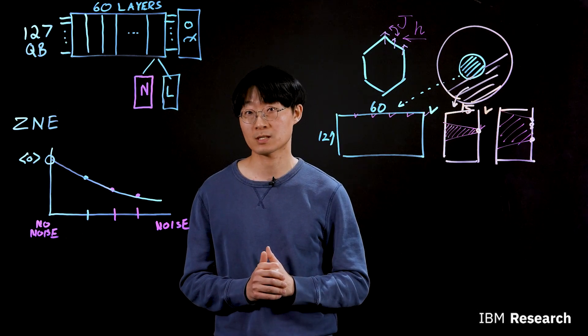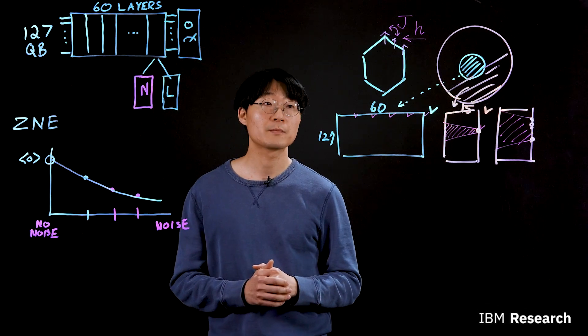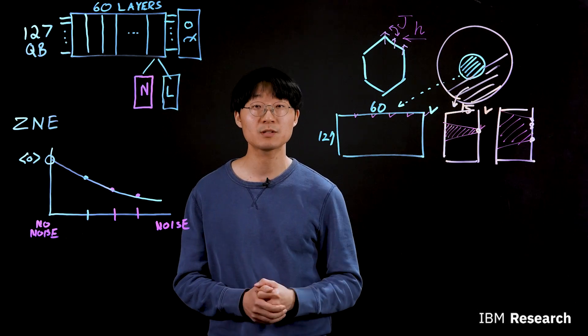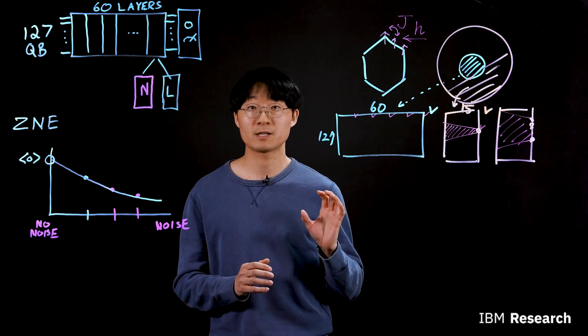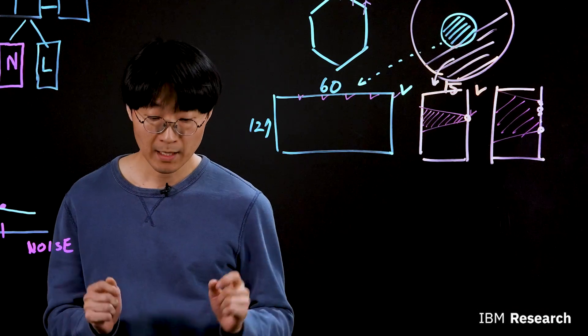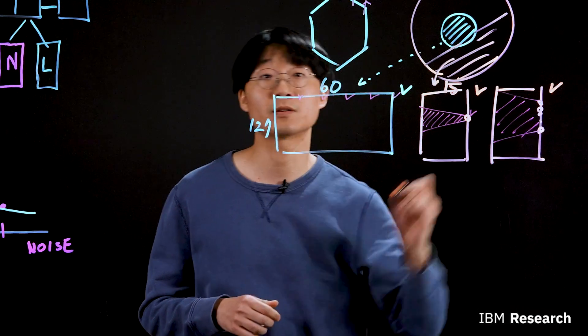Instead, they use numerical approximation method, specifically tensor network method. They realize that using this method, they still can obtain exact solution. So we compare their exact solution against our results from quantum computer. And they, again, agree each other reasonably well. So there's another check.